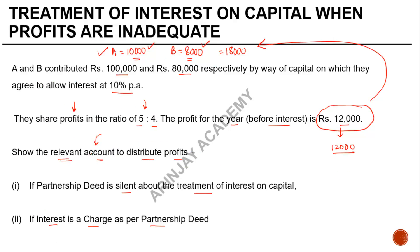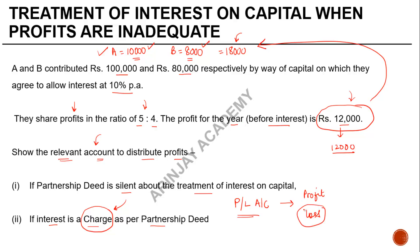Now let's look at the second part: how to show the relevant account if interest is a charge as per the partnership deed. When interest is a charge, it means it has to be expensed off in the Profit and Loss account itself — you do not prepare a Profit and Loss Appropriation Account. In this case, the profit is ₹12,000 and the interest is ₹18,000, so a loss arises. This loss is distributed between the partners in their profit-sharing ratio.